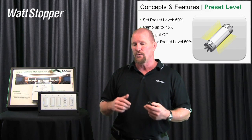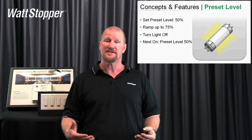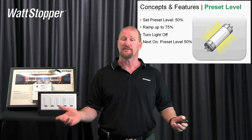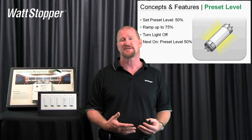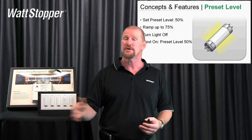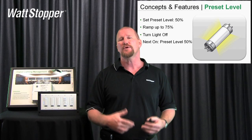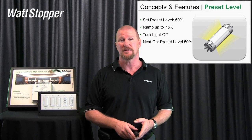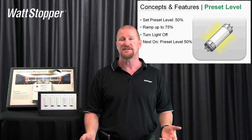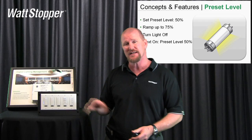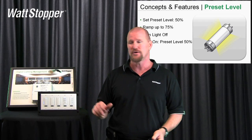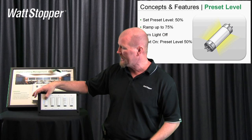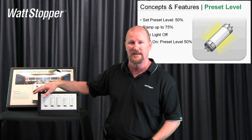What this allows you to do is achieve additional energy savings. In a private office with bi-level switching, when the occupancy sensor turns on load one, what if it only came on to 90%? You've got an additional 10% energy savings out of the box. Preset level is a soft limit, so I can always press and hold the dimmer and raise the lights if I need more light.